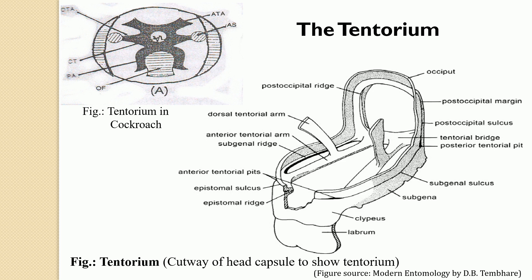The tentorium braces the epicranial valve, giving it strength. It serves as a site of attachment for the ventral adductor muscles of the gnathal appendages, retractor muscles of the hypopharynx, and also the ventral dilators of the stomodium. In most insects, the antennal muscles are attached to the dorsal arm of the tentorium; if dorsal arms are absent, the antennal muscles reach up to the anterior tentorial arm.